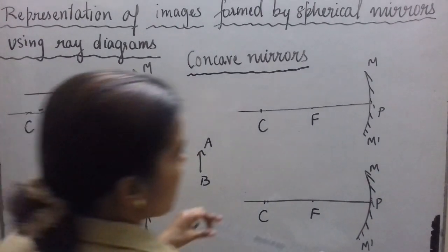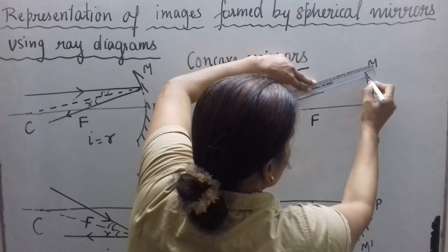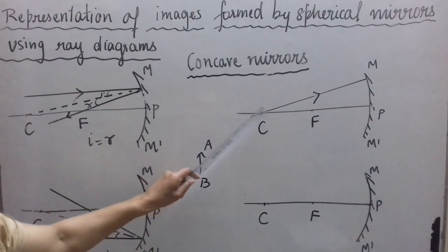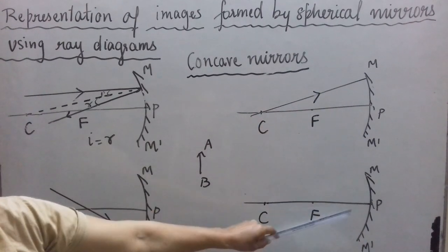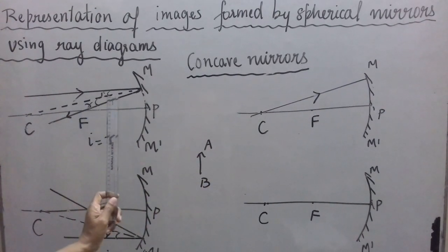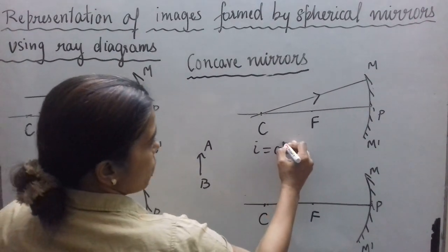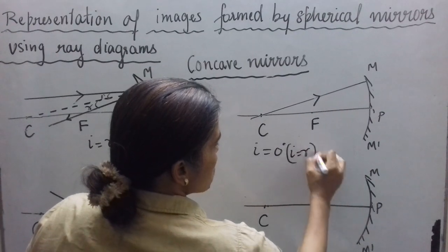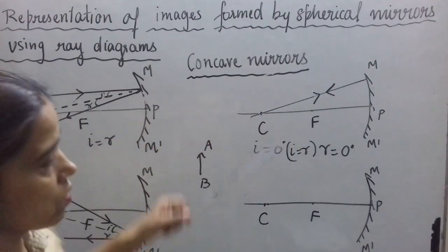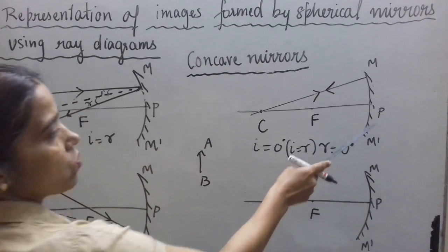Now let us consider the third case — when the incident ray is passing through the center of curvature C. We know that a line joining the center of curvature and the point of incidence for spherical mirrors is the normal at that point of incidence. So this is a case of normal incidence: I is equal to 0 degrees and since I equals R, R is also 0 degrees. In this case the reflected ray will retrace the same path. So if an incident ray passes through the center of curvature, it gets reflected back along the same path after reflecting from a concave mirror.